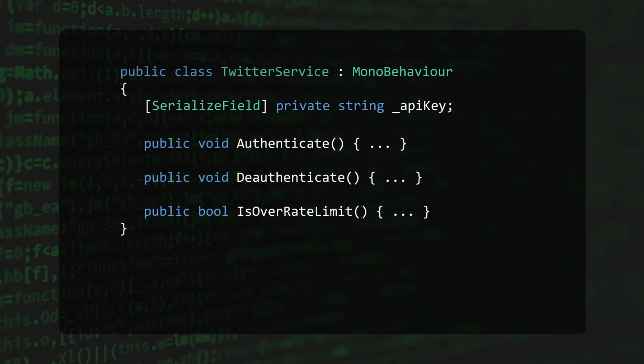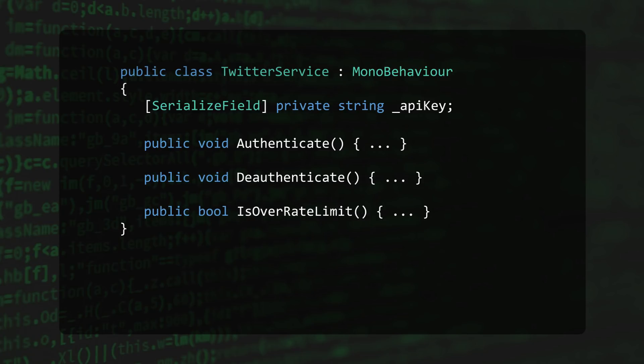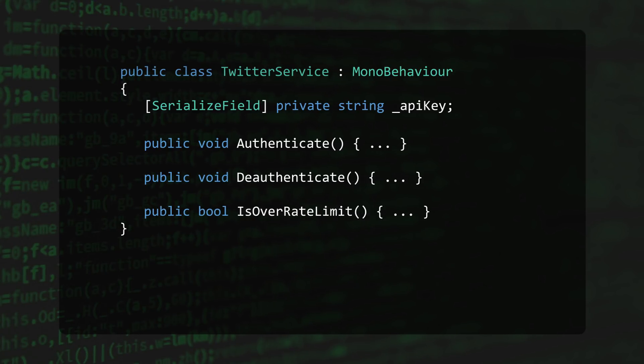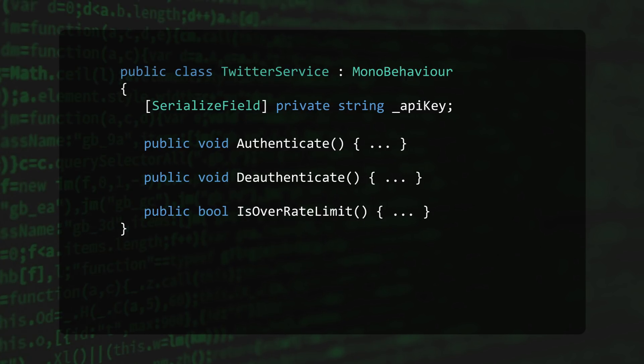Take this service class that acts like a wrapper around Twitter's API, for example. It could be injected all over your project and used by any number of subsystems in your game. But it's a service — not some entity that exists in your scene.